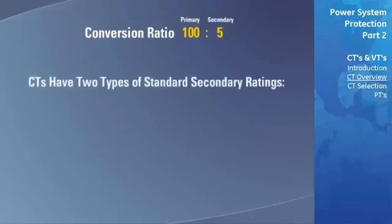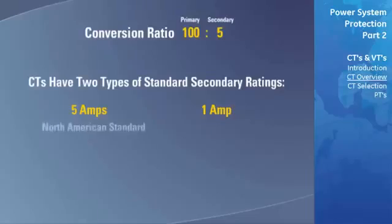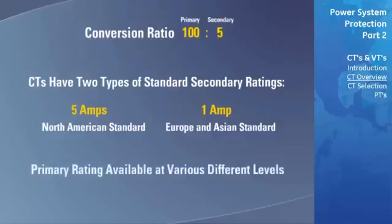CTs have two types of secondary ratings: 5 amps and 1 amp respectively. 5 amps is typically the North American standard, while 1 amp is used in Europe and Asia. CT ratios are available in various different levels, for example, 100, 150, 200, etc.